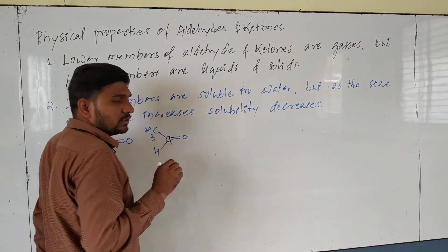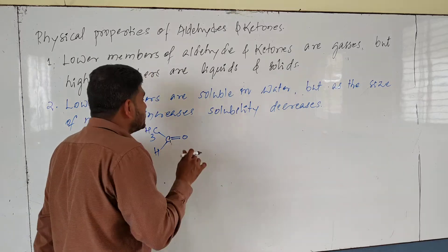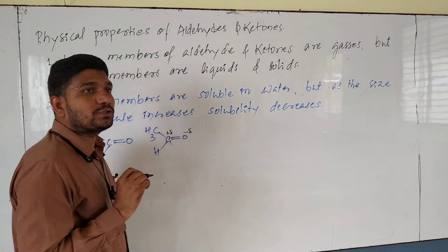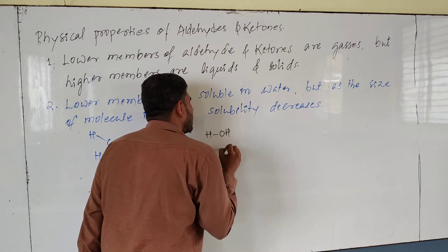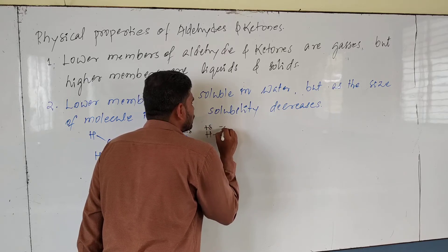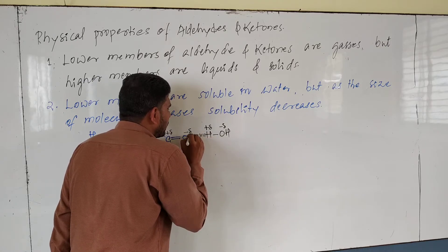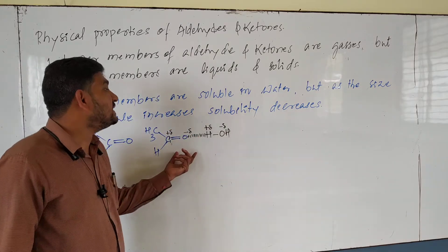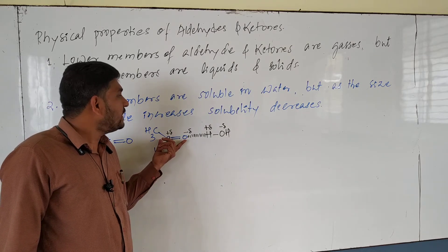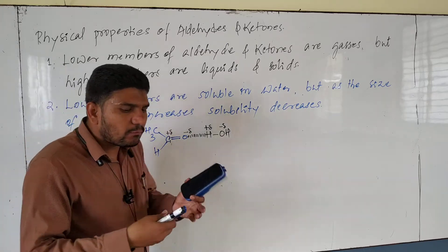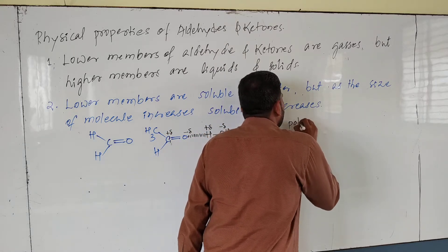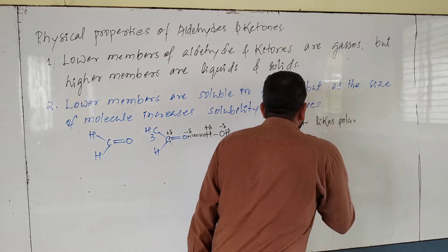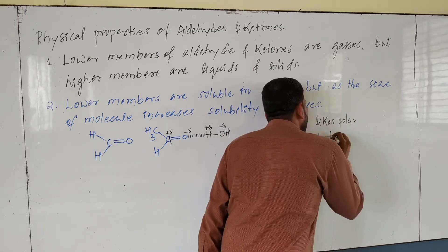In water, H carries partial positive charge and O carries partial negative charge. The O− of the carbonyl group is attracted by the H+ of water — this is how hydrogen bonding forms. This is why lower members of aldehydes and ketones are soluble in water. Remember this rule: polar likes polar, nonpolar likes nonpolar.